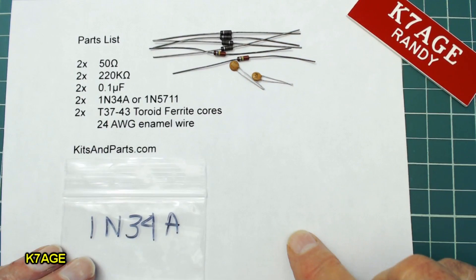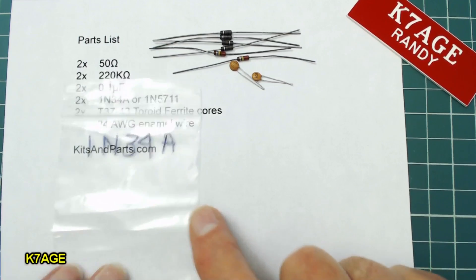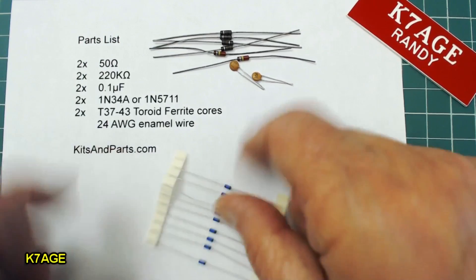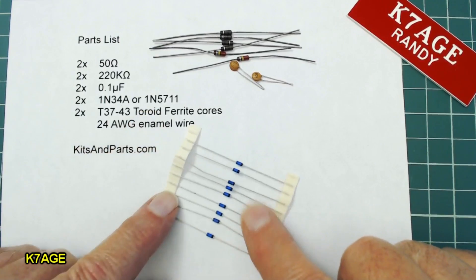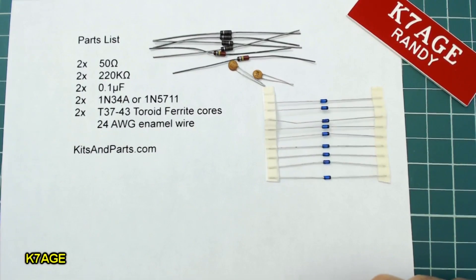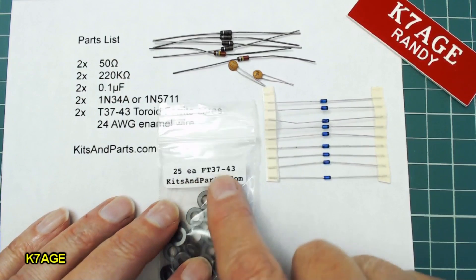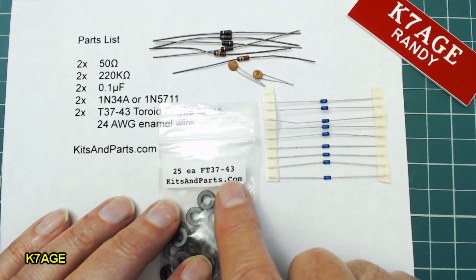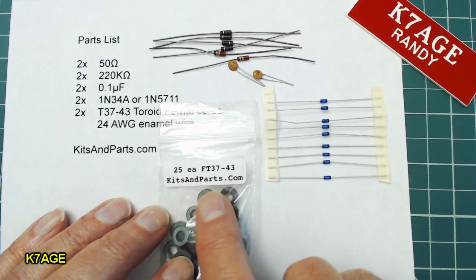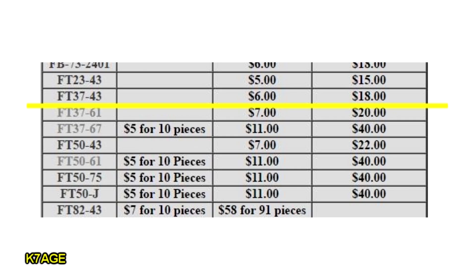And then for the diodes, you can use either 1N34A diodes, which I only have two of those left, so I'm not going to use those. But I have a whole bunch of the 1N5711s left over from a previous project, so I have my diodes. And then the toroidal cores, I bought a bag of 25 of the FT37-43 cores from Kits and Parts. They have a lot of this type of material, a lot of toroids in all different diameters and different mixtures of the ferrite.